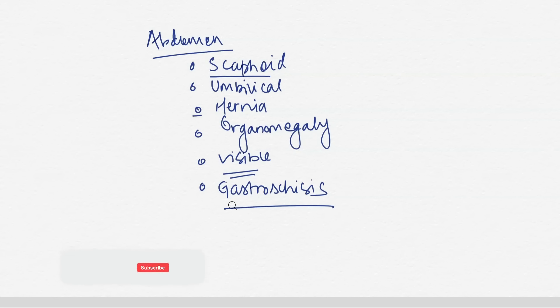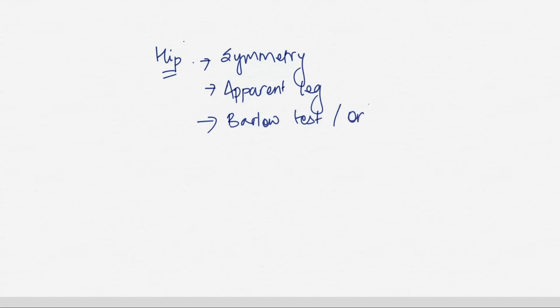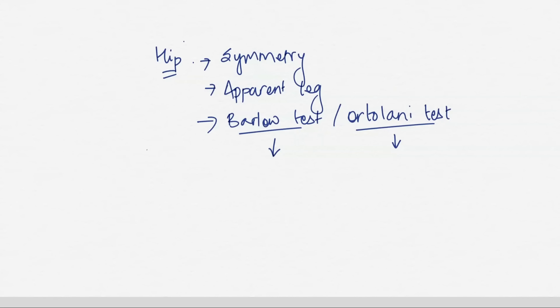For the hip examination, first look for asymmetry of the gluteal skin folds, then check apparent leg length. Then perform the two key tests: Barlow's test, where you adduct the flexed hips and push backwards to dislocate the hip, and Ortolani's test, where you relocate the hip. Briefly: Barlow's pushes the hip out, Ortolani's pushes it back in — both are used to check for developmental dysplasia of the hip.